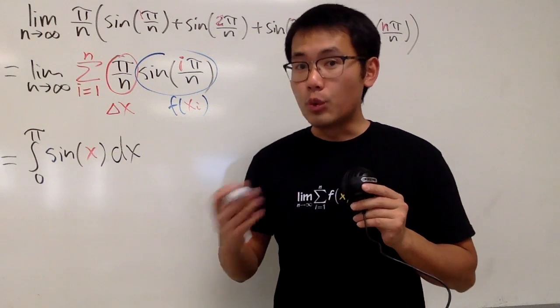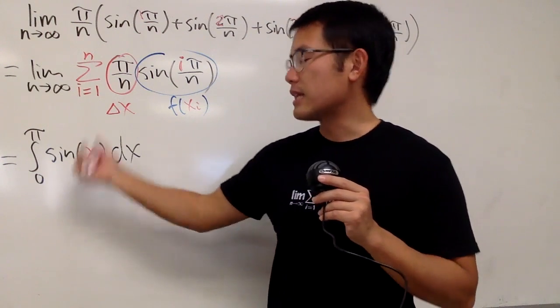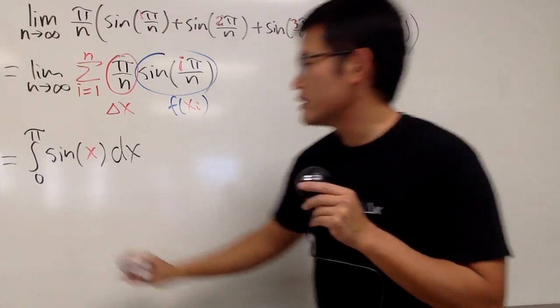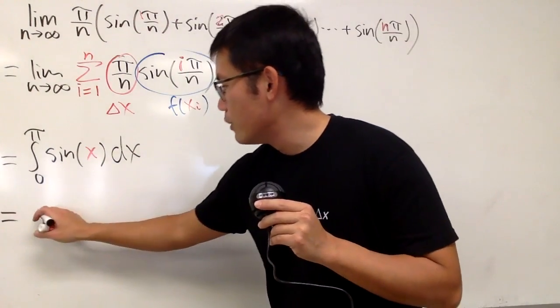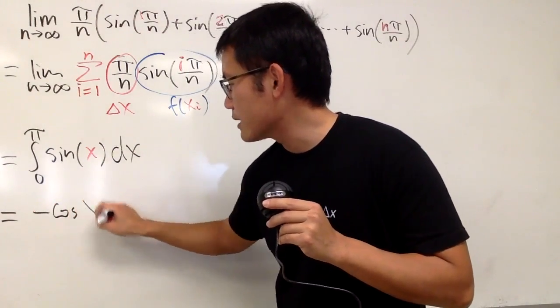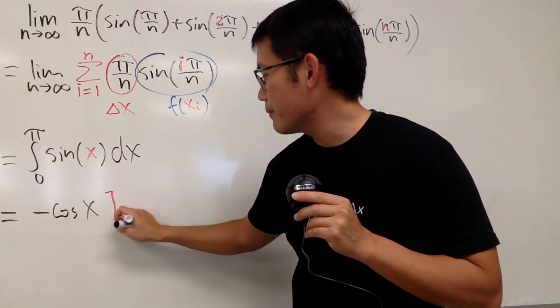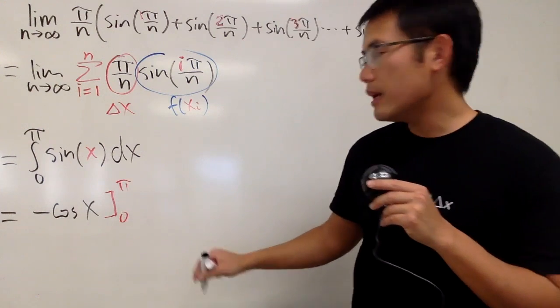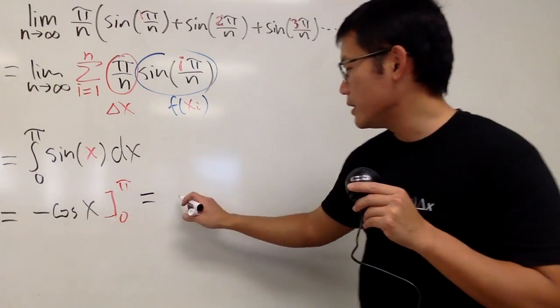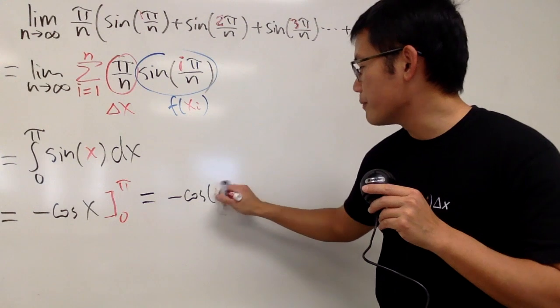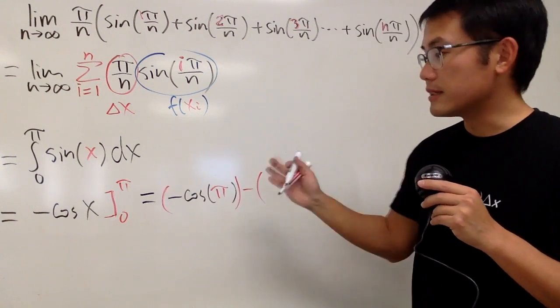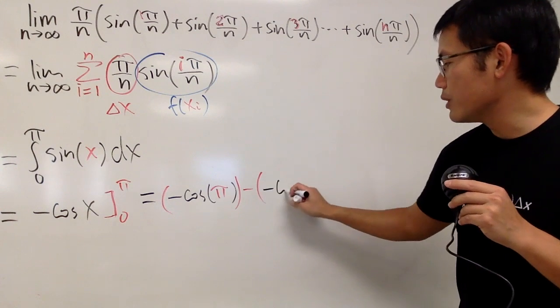And just ask yourself, derivative, what will give us sin x? And the answer to that is negative cosine. So, the first step is, we have negative cosine x right here, and then we are going to be plugging. So, here is 0 and here is π, and then I will just write this down, this is going to be negative cosine of π. So, this is the first part, and then minus the second part, you put 0 into cosine.